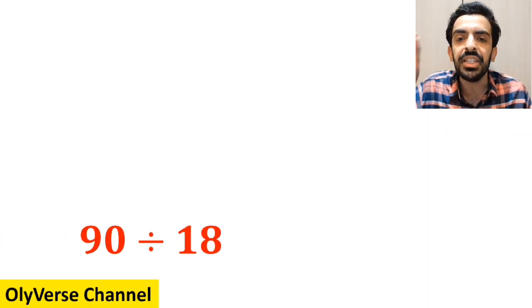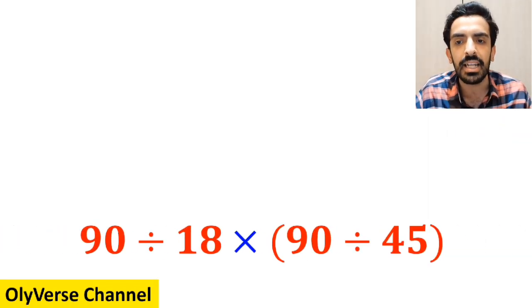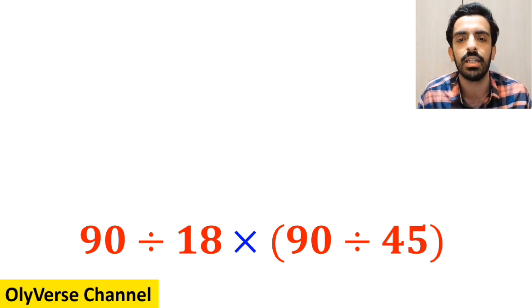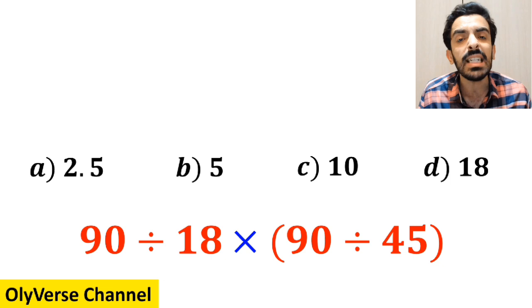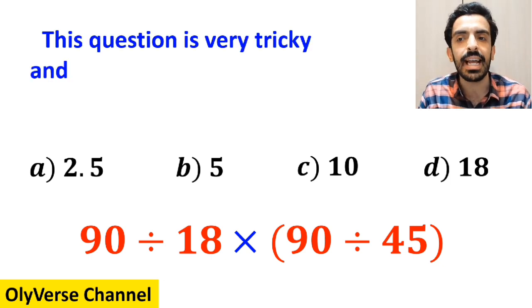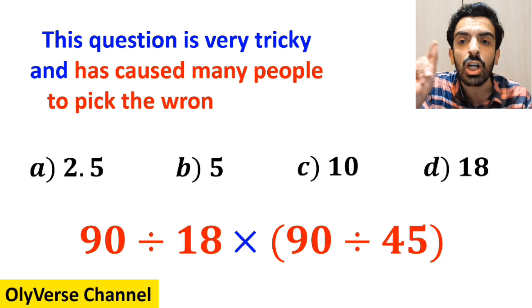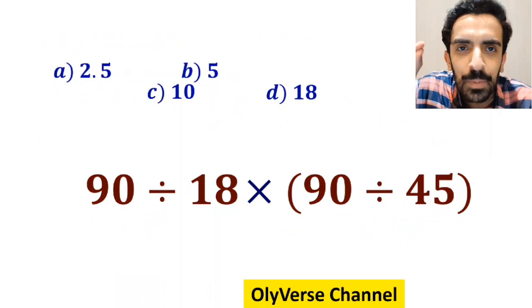What is the value of the expression 90 divided by 18 then multiply by open parenthesis 90 divided by 45 close parenthesis? Which option do you think is the correct answer to this question? This question is very tricky and has caused many people to pick the wrong option. Let's break it down and solve it together.